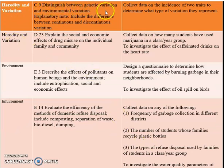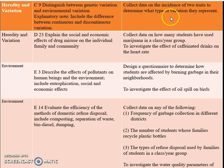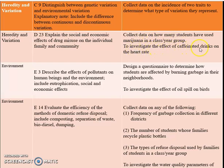Heredity continues with the objective to distinguish between genetic variation and environmental variation, including the difference between continuous and discontinuous variation. Students can collect data on the incidence of two traits to determine what type of variation they represent. They can also explain the social and economic effects of drug misuse on the individual, family, and community — collecting data on how many students have used marijuana in a class, year group, family, or community, and investigate the effect of caffeinated drinks on heart rate.